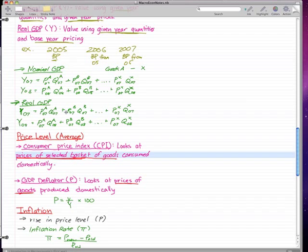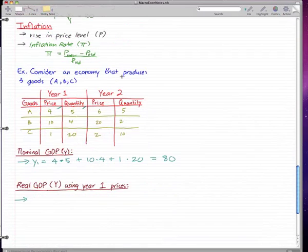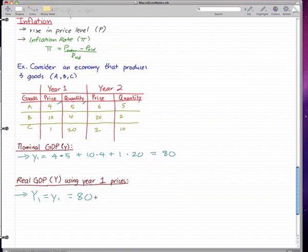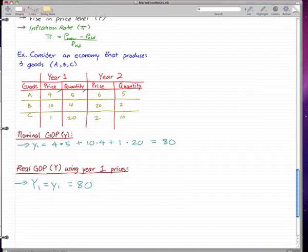Remember from our past videos that real GDP is essentially the same thing as nominal GDP for the base year. So for year one, real GDP would be the same as the nominal GDP for year one. We don't even have to calculate it. The real GDP Y1 is simply equal to little y1, which equals 80.